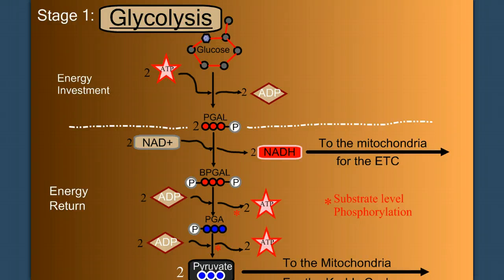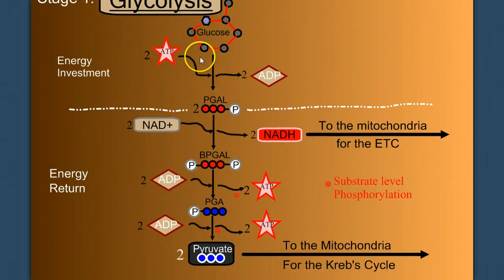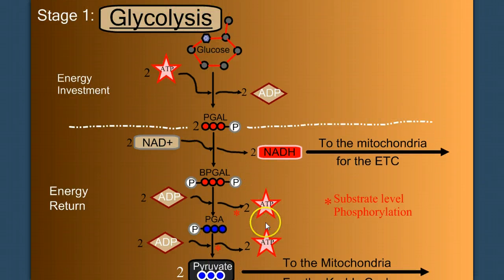In part one, we covered glycolysis, where glucose was broken down. We had to spend a little ATP and ended up making two pyruvates. In doing so, we made four ATP, a profit of two once we spent these two, and we made NADH, which we sent on to the electron transport chain, the topic of this video.